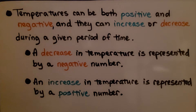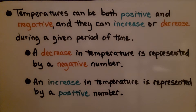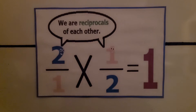Temperatures can be both positive and negative, and they can increase or decrease during a given period of time. A decrease in temperature is represented by a negative number, and an increase in temperature is represented by a positive number. To solve one-step multiplication and division equations, we're going to have to use inverse operations.